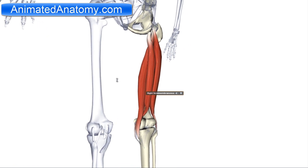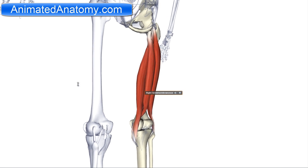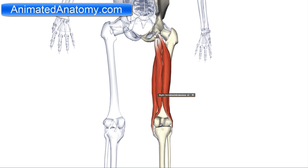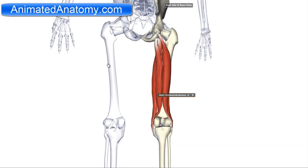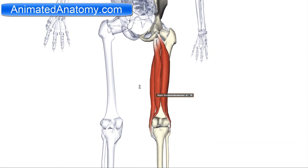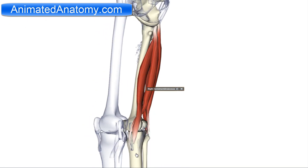Then we have the semimembranosus muscle. The semimembranosus muscle also has its origin on the ischial tuberosity. The insertion of this muscle is on the medial surface of the tibia — it does not insert on the pes anserinus, but on the medial surface of the tibia.